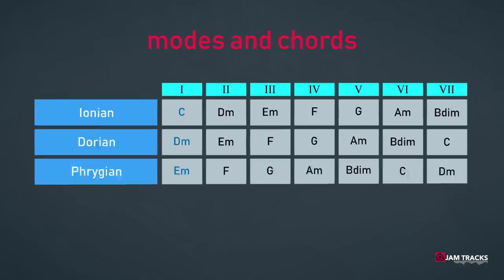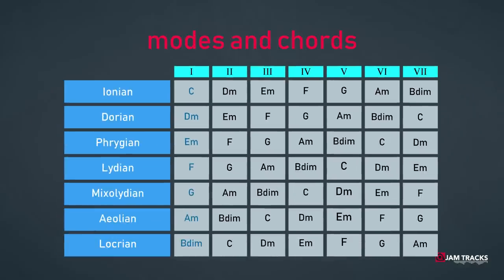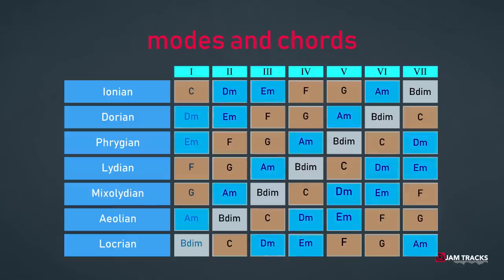If we go on and do this for all the modes, we will see that every mode has a specific chord configuration which is typical for that particular mode. The placement of major, minor, and diminished chords determines the sound of the modal cadence.